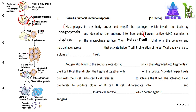Then, helper T cell will bind with the antigen-MHC complex. Macrophage will secrete interleukin-1, which activates helper T cell. This causes proliferation of helper T cell, giving rise to a clone of activated helper T cells.